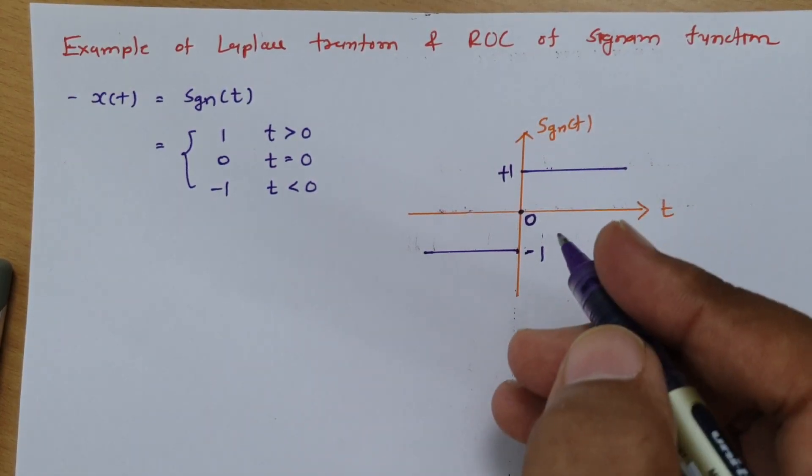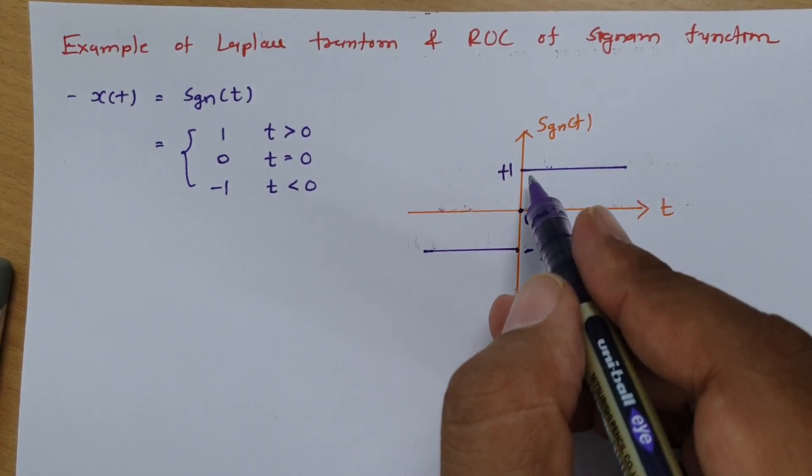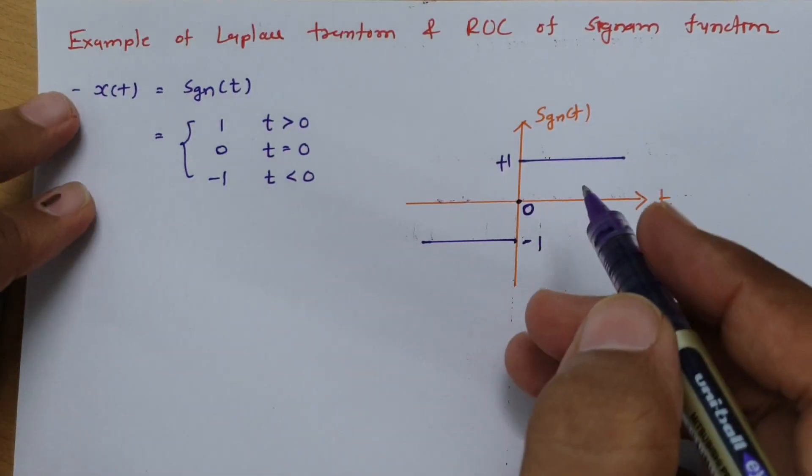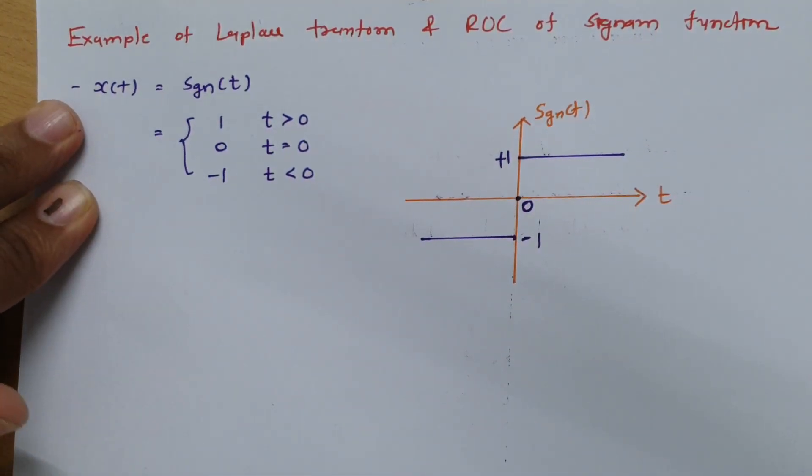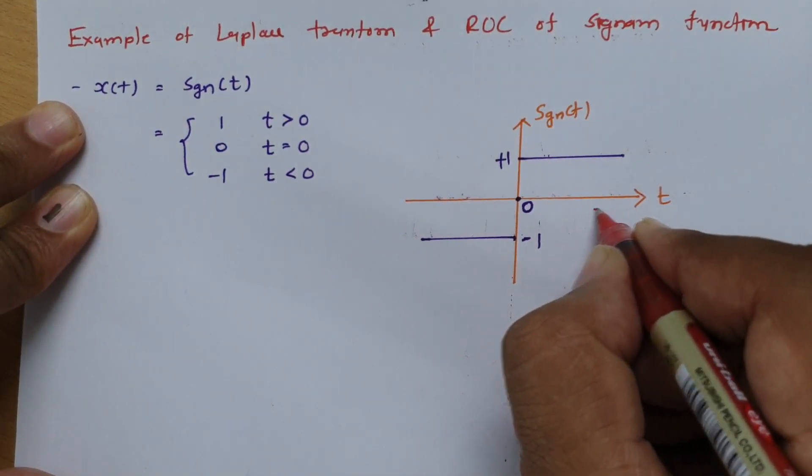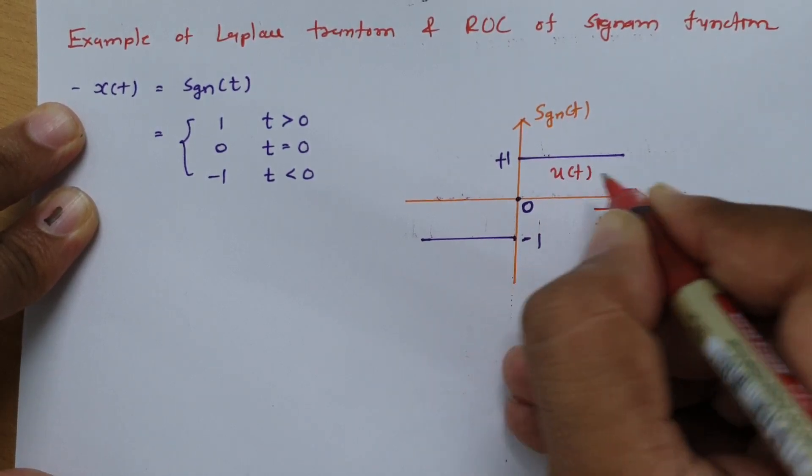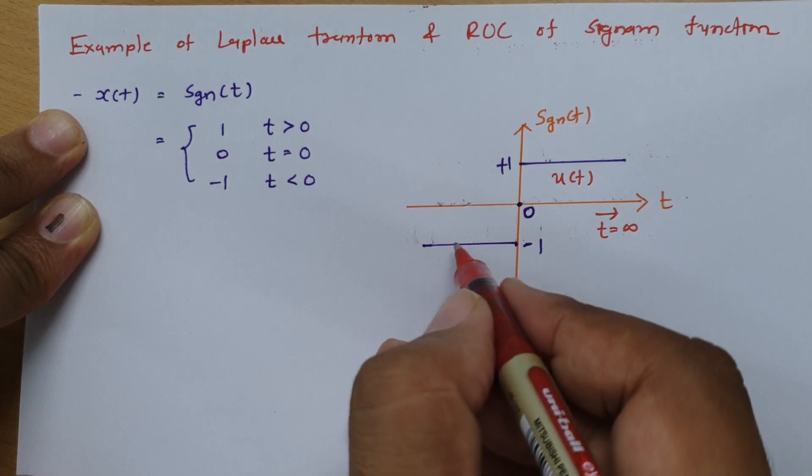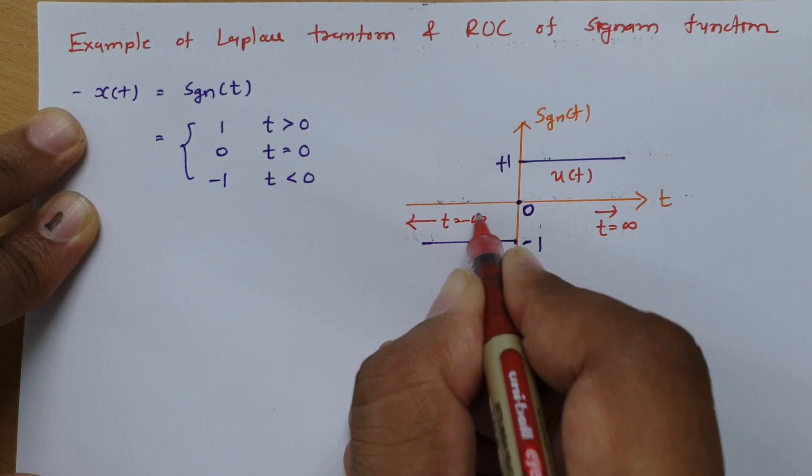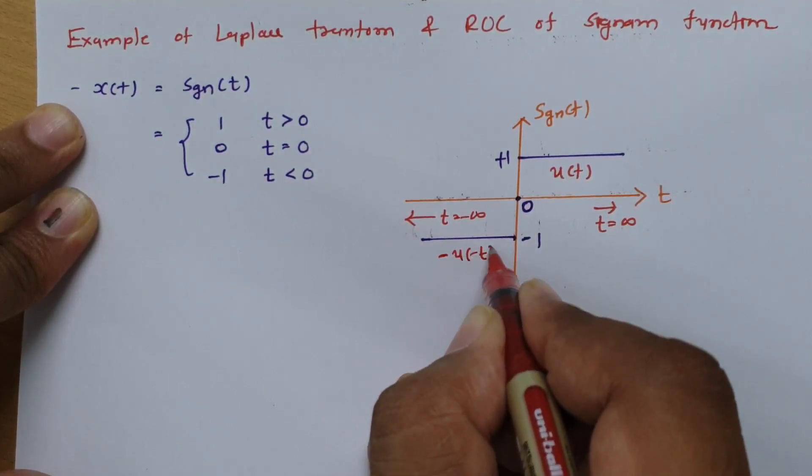Now, as if you observe this signum function, it is a combination of two signals, one signal is plus 1 and second signal is minus 1. So if you say this plus 1 signal that is happening towards t equals infinity, so that signal is u of t and if you observe the signal which is happening in this direction towards t equals minus infinity then that is minus u of minus t.